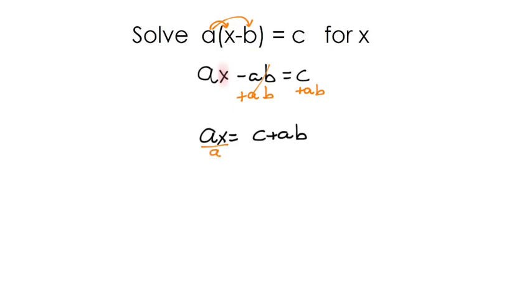Lastly, to get that X by itself, I'm going to divide by A. I'm choosing to divide because I'm seeing X times A. So I'm using the inverse operation of division. Anything I do to one side, I also do to the other. And so we're left with X equals C plus AB all over A.